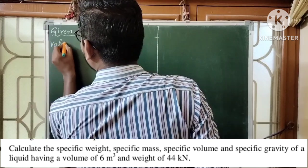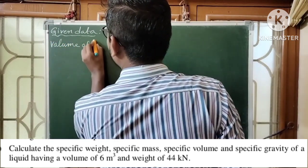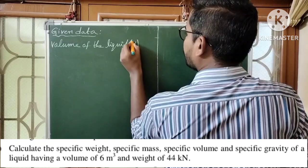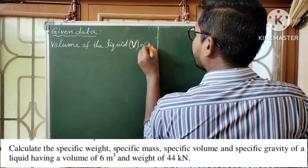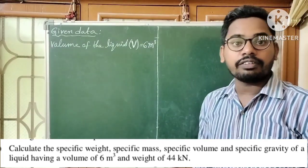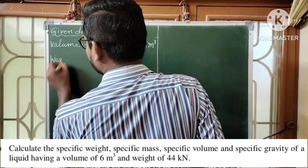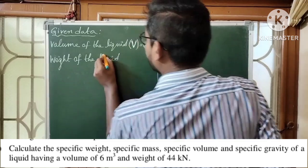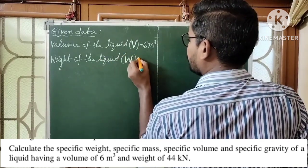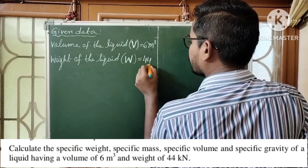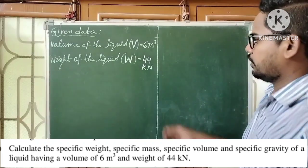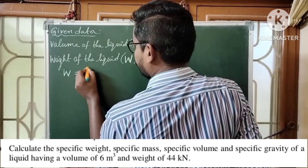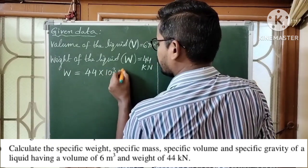The given volume of the liquid — volume V is equal to 6 meter cube. The SI unit is meter cube. Next, the given weight of the liquid: capital W is equal to 44 kilonewtons. Let us convert kilonewtons into newtons. We know that kilo means 10 cubed, so W is equal to 44 into 10 cube newtons.